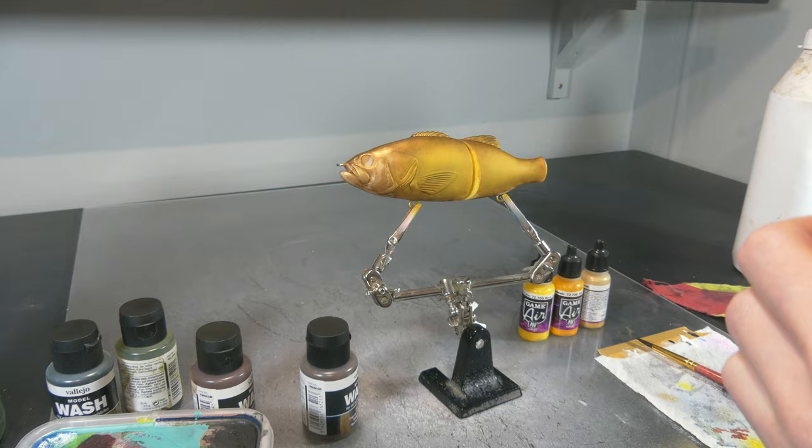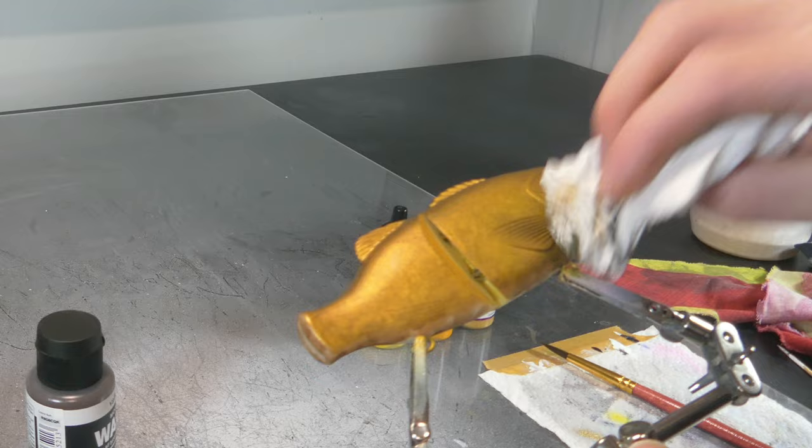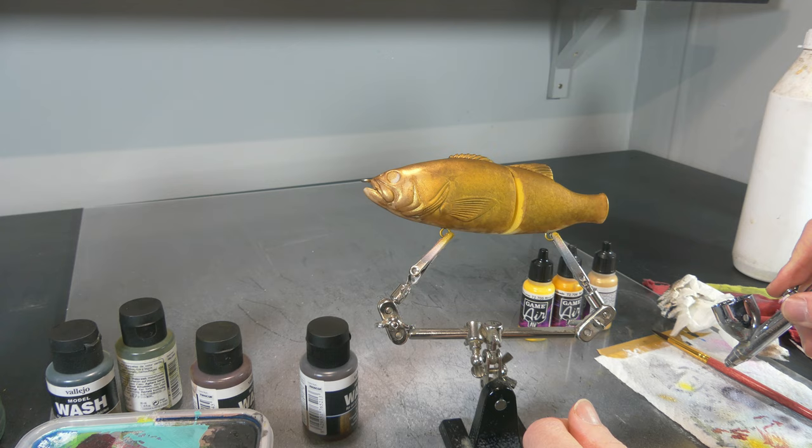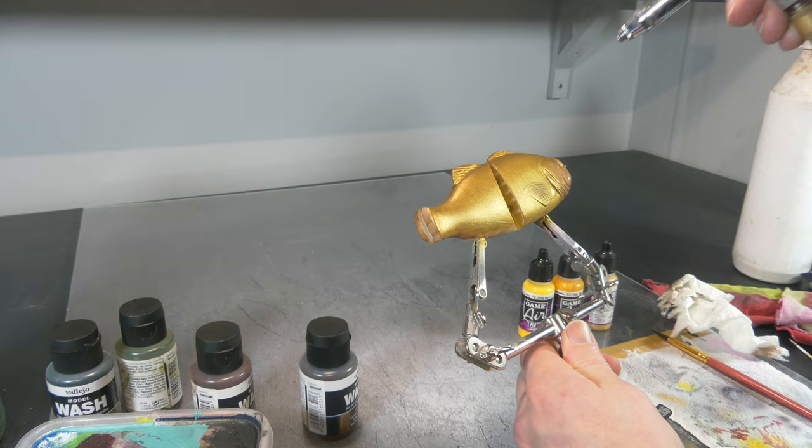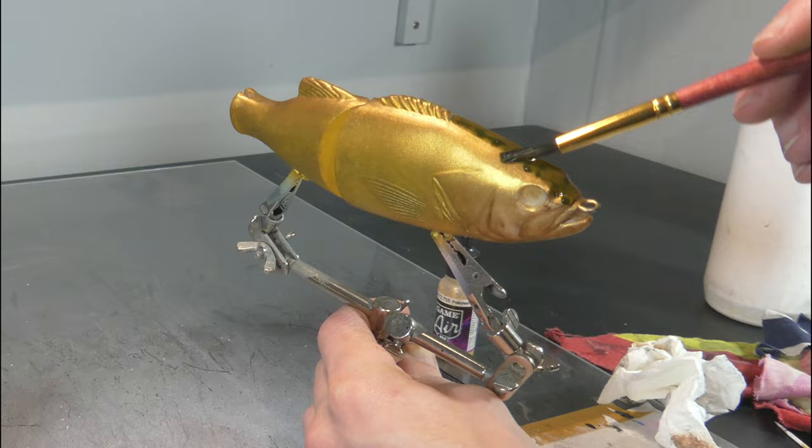And now I'm going to dab a Vallejo dark brown wash with a paper towel onto that yellow, and that is to create a little bit more of a skin-like feeling. And to push back those dark spots that we created with the paper towel, I'm going to spray a little bit of a Vallejo polished gold on top of that, and that's going to push back all those brown spots a little bit more back into the background.